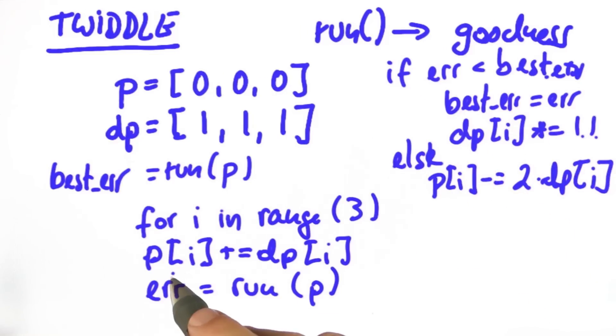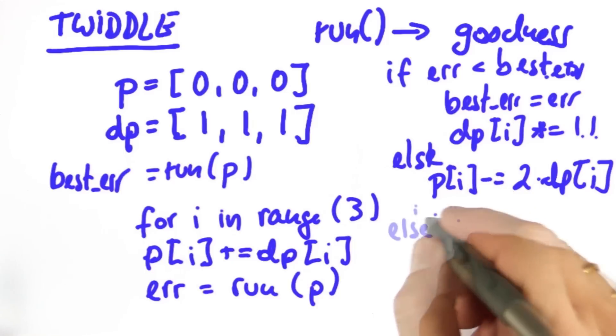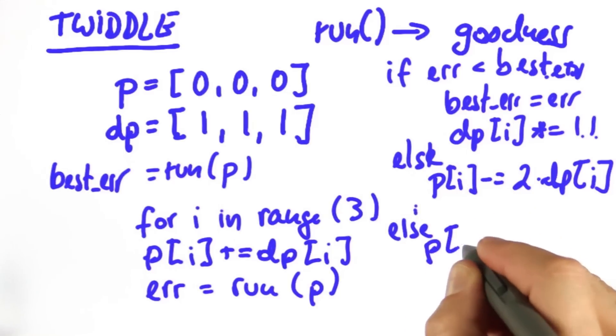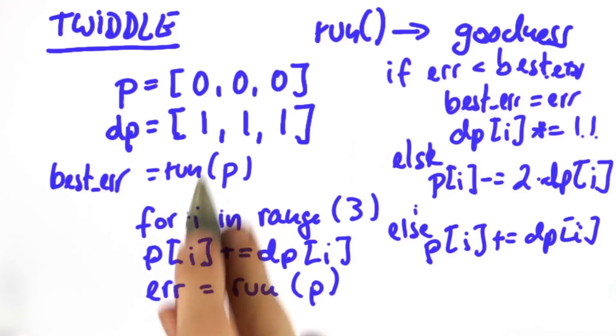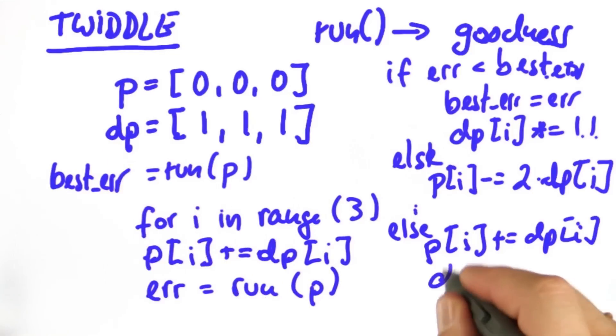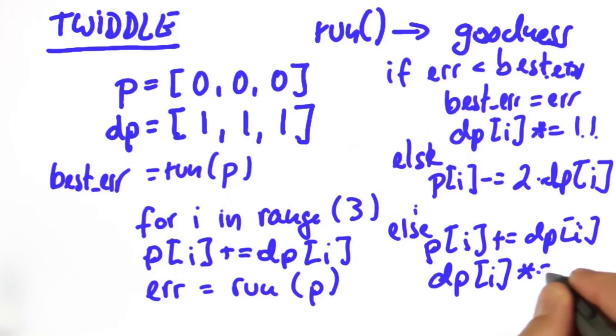But if both of those fail, this one over here and this one over here, we set back pi to the original value and we decrease our probing thing over here. Say we're multiplying it with 0.9.